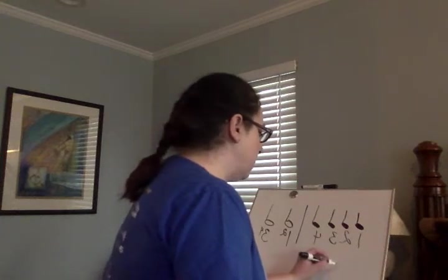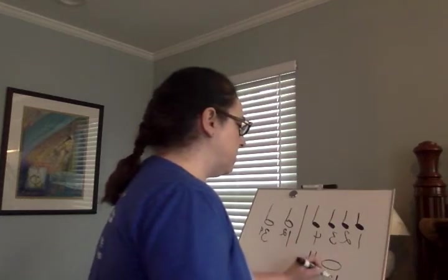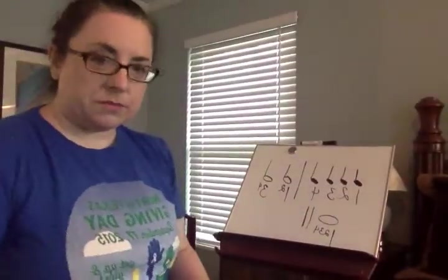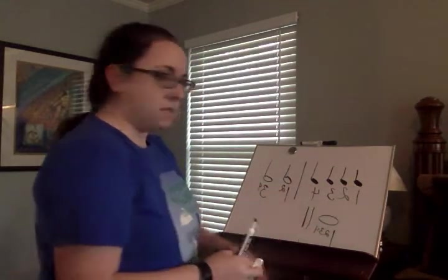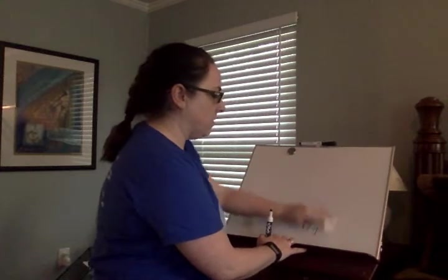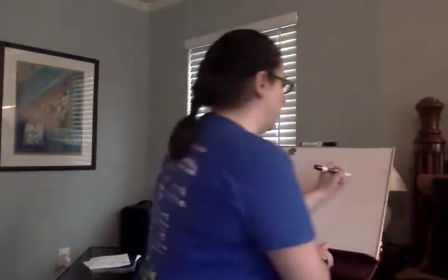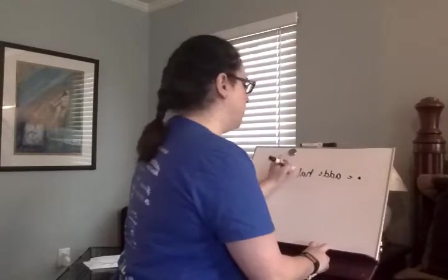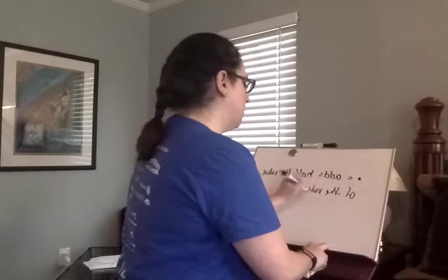We know that a whole note gets the entire measure because there are four beats — two half notes — in a whole note in 4/4 time. So: one. We have notes that are one beat, notes that are two beats, and notes that are four beats. Now, to give us the ability to have notes that are three counts, we add a dot. When you add a dot to any note, it adds half the value of the note to itself.